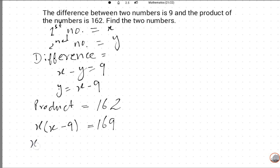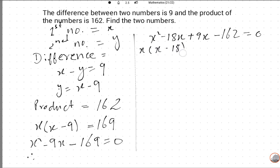X square minus 9X. I will move 162 directly, so I will use midterm break. X square minus 18X plus 9X minus 162 is equal to 0. X times X minus 18 plus 9 times X minus 18.